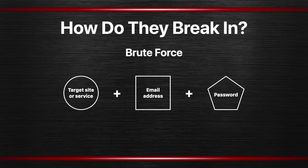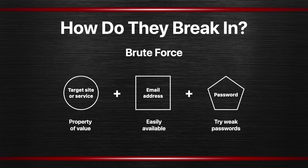The third part is the password. With those three things — the target site, your email address, and the password — if somebody has all three they can get into your account. The target is always going to be a property of some value: your bank, social media accounts, email accounts, the account on your computer, your iCloud account, shopping sites like eBay and Amazon. There's value in having access to somebody else's account on these targets.